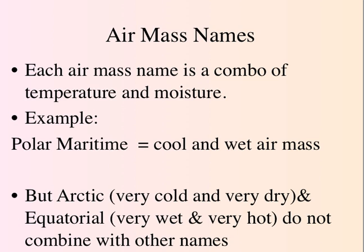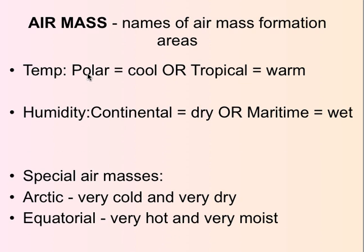Each air mass is named using a combination of temperature and moisture. So polar maritime means a cold and wet air mass. You can only get polar continental or polar maritime, tropical continental or tropical maritime — so there are only four normal choices, plus the two special air masses.